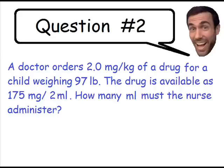Question number two. A doctor orders 2 milligrams per kilo of a drug for a child weighing 97 pounds. The drug is available as 175 milligrams per 2 milliliters of solution. How many milliliters must the nurse administer?